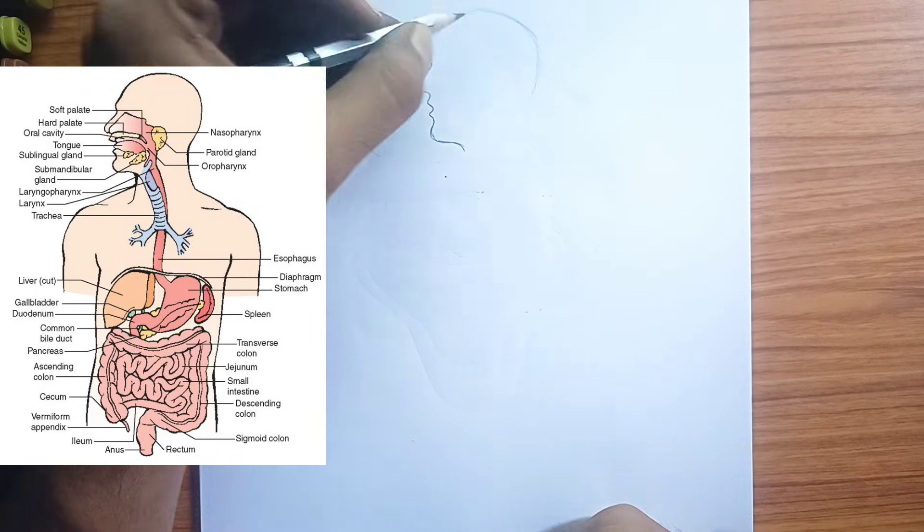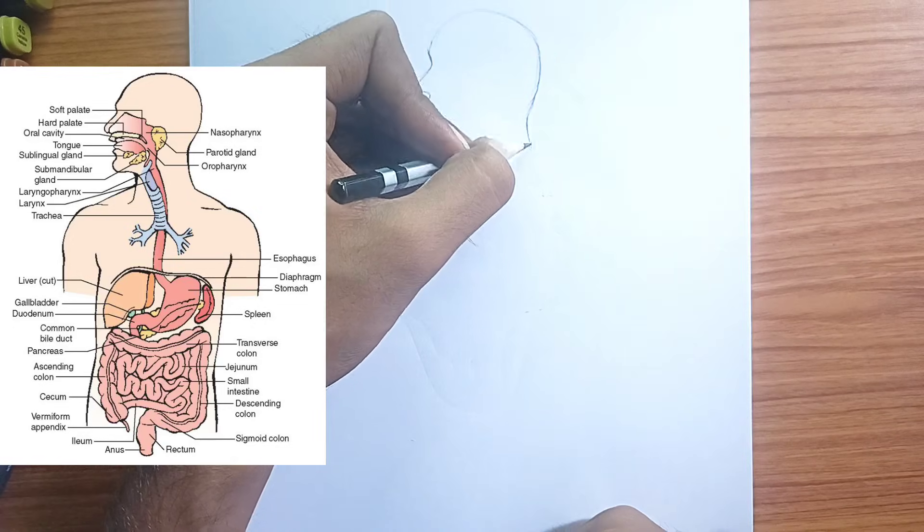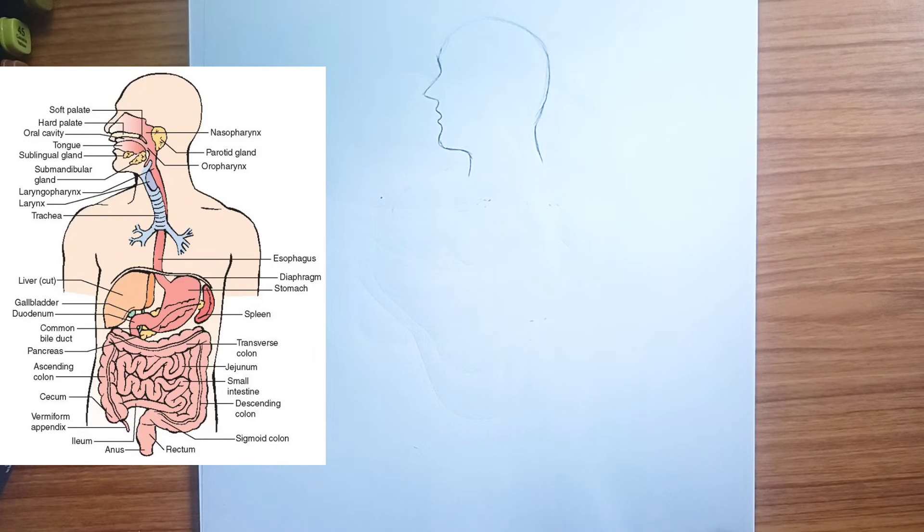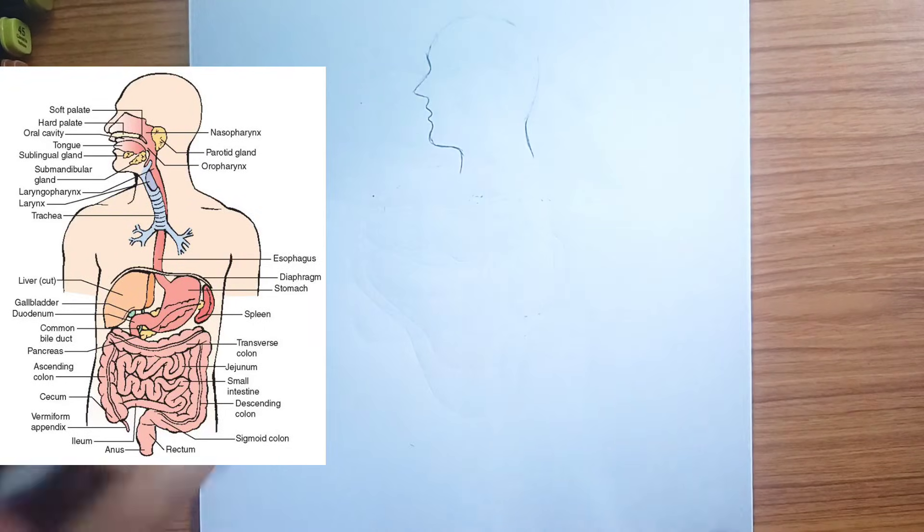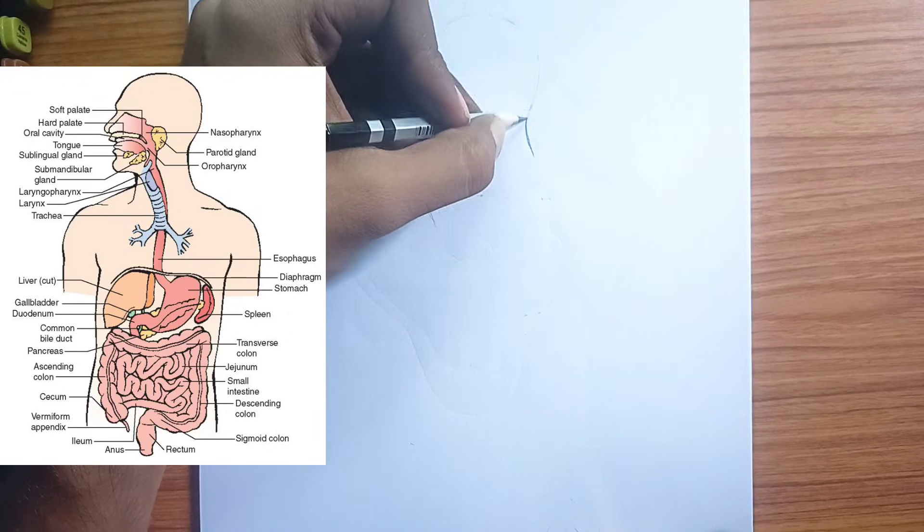Here's a quick rundown. Mouth: chewing, mechanical digestion, and saliva, chemical digestion of carbohydrates, begin the process. Esophagus: food travels down this muscular tube to the stomach via peristalsis, wave-like muscle contractions.